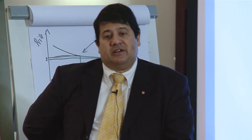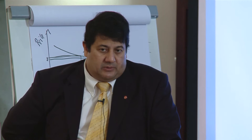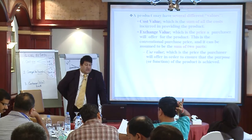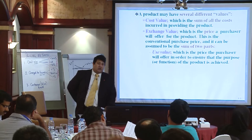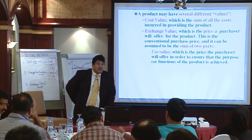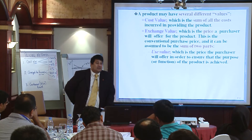A product has several different values. There is the cost value — the sum of all costs incurred to provide the product. Then there is the exchange value — the price the customer is willing to pay. That exchange value is itself the sum of two parts. There is the use value: the price the purchaser will offer in order to ensure the purpose or function of the product is achieved. When I offered you a bottle of water after you came out of the desert, the function was drinking the water — that is the use value.